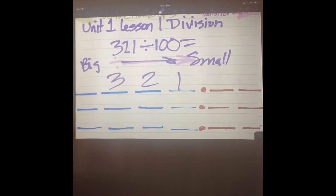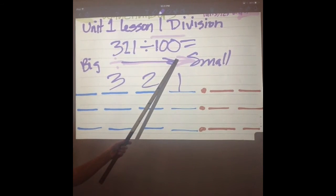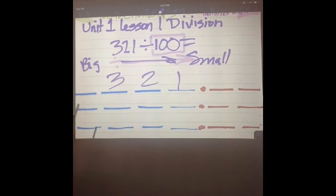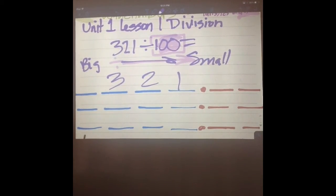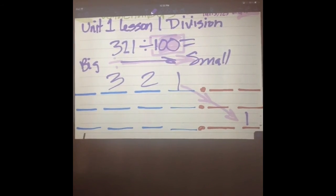We're going to shift it how many spaces? Two. Why are we going to shift it two spaces? Because there are two zeros in a hundred. So let's go ahead and do that. We're going to shift the one over two times to the right—one, two. It's in what place? Hundredths, with T-H-S. It means a hundred pieces. Good job.